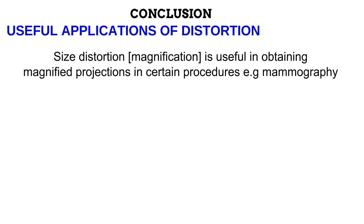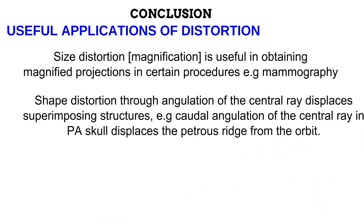We discussed how distortion causes structures to be misrepresented on a radiograph, and most of the time this is bad and unwanted. However, there are times when distortion can be useful and is caused on purpose. Let us highlight some useful applications of distortion. First, size distortion — also known as magnification — is useful in certain procedures like mammography to obtain magnified views of the anatomy. Sometimes in mammography the lesions are very tiny. To get more information out of the procedure, the breast tissue is kept at a distance from the image receptor, causing the image to be magnified so that tiny lesions are now bigger and easier to diagnose. Also, shape distortion is achieved in the many angulation views used in radiography. By cranially or caudally angling the tube such that it is no longer perpendicular to the anatomy and image receptor, shape distortion occurs. This can help to displace superimposing structures that we are not interested in. One example is in the posterior anterior image of the skull, where the tube is angulated downwards to displace the Petrous ridge from the orbit.